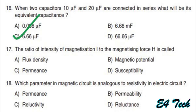Next: the ratio of intensity of magnetization I to the magnetizing force H is called susceptibility. χ = I/H, also expressed as M/H. Susceptibility equals intensity of magnetization divided by magnetizing force. Option D.